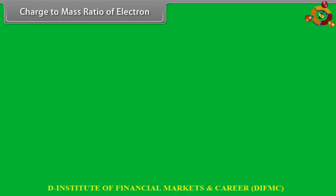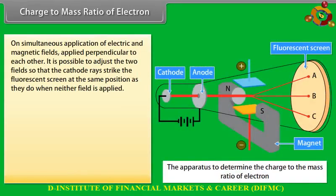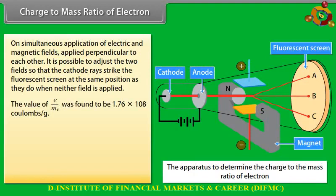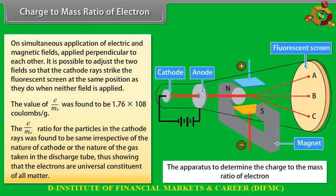Charge-to-mass ratio of electron: On simultaneous application of electric and magnetic fields perpendicular to each other, it is possible to adjust the two fields so that cathode rays strike the fluorescent screen at the same position as when neither field is applied. The value of charge-to-mass ratio of electrons was found to be 1.76 × 10⁸ coulombs per gram. This ratio was the same regardless of the nature of the cathode or the gas, showing electrons are universal constituents of all matter.